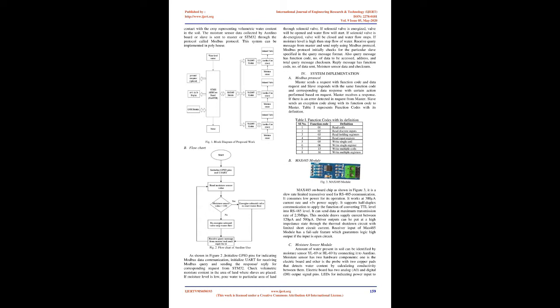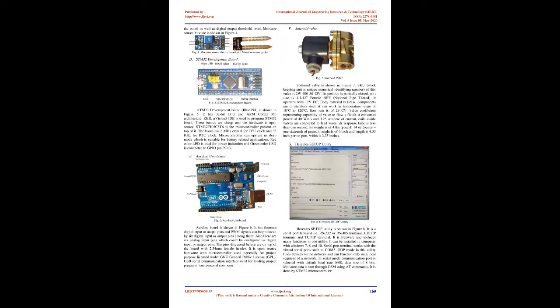Modbus protocol initially checks for the particular slave specified in the query message format. The query message includes a function code, number of data to be accessed, address, and total query message checksum. The reply message includes a function code, number of data sent, moisture sensor data, and checksum. The master sends a request with a function code and data request, and the slave responds with the same function code and corresponding data response with a certain action performed. If an error is detected in the request from the master, the slave sends an exception code along with its function code. Table I represents function codes with their definitions.